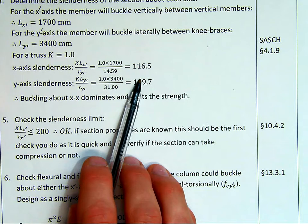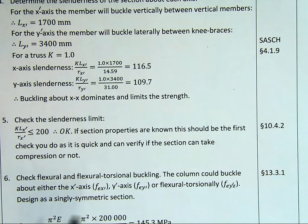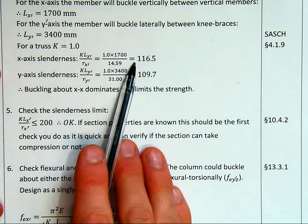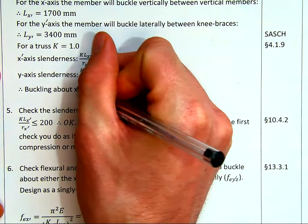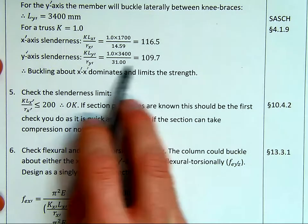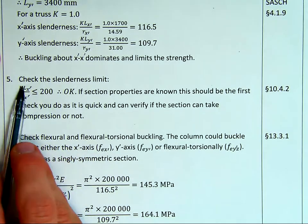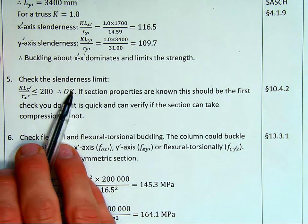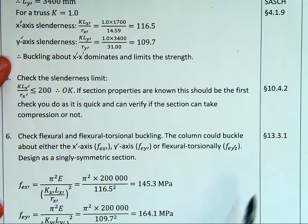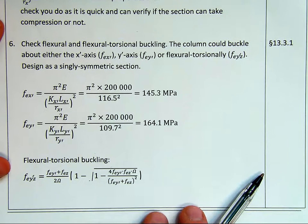Then buckling about XX dominates and limits the strength. So we'll see shortly, the code only tells us to check normally the X-primed and the FEY-primed Z, but we're checking both simply because there's different effective lengths about different axes. So when that happens, you should actually check both. So now we know since this axis is longer, it's our X-primed axis. Make sure you always know which axis system you're dealing with. We're going to check our strength about that axis. So this is now less than equal to 200, therefore it's okay, we've checked our limit. If section properties are known, this should be checked first. It's quick and you can do it relatively quickly.